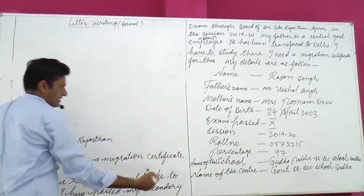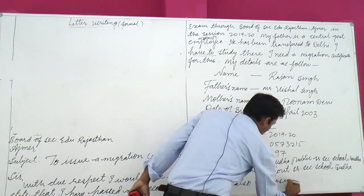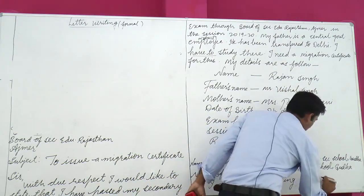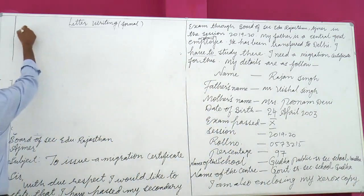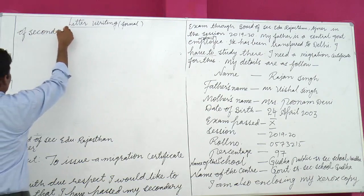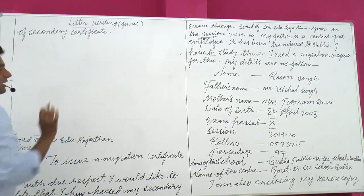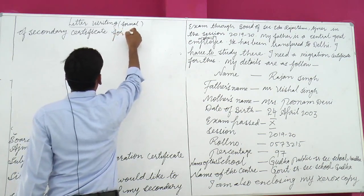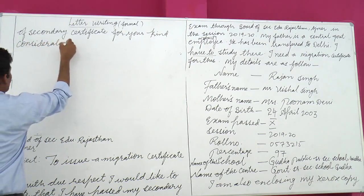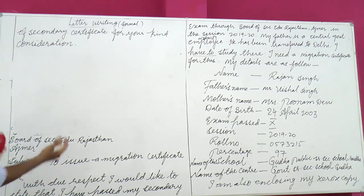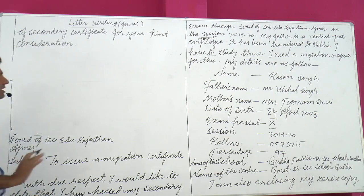Now change the paragraph. I am also enclosing my xerox copy of the secondary certificate for your kind consideration — or you can write 'for your perusal.' This means: I am attaching the photocopy of my 10th mark sheet for your kind attention and review.